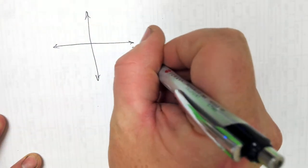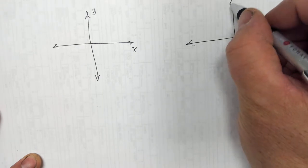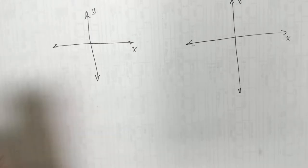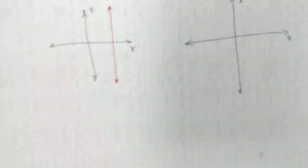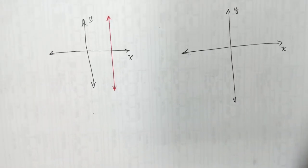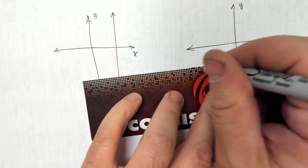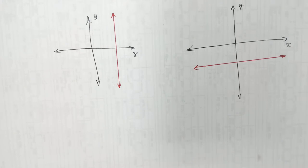We're going to draw a graph. This is the x-axis, that's the y-axis. We're going to do two of them — a vertical one and a horizontal one. These are the two things that are going to confuse you, so I want to talk about them.